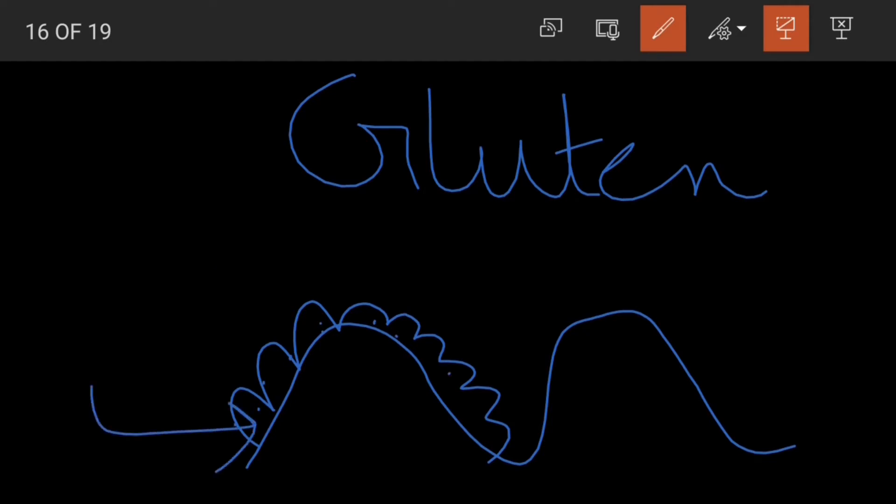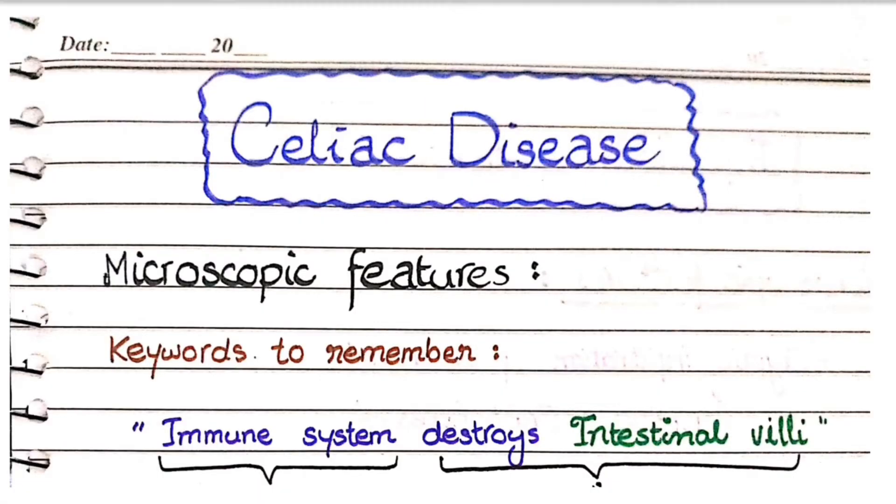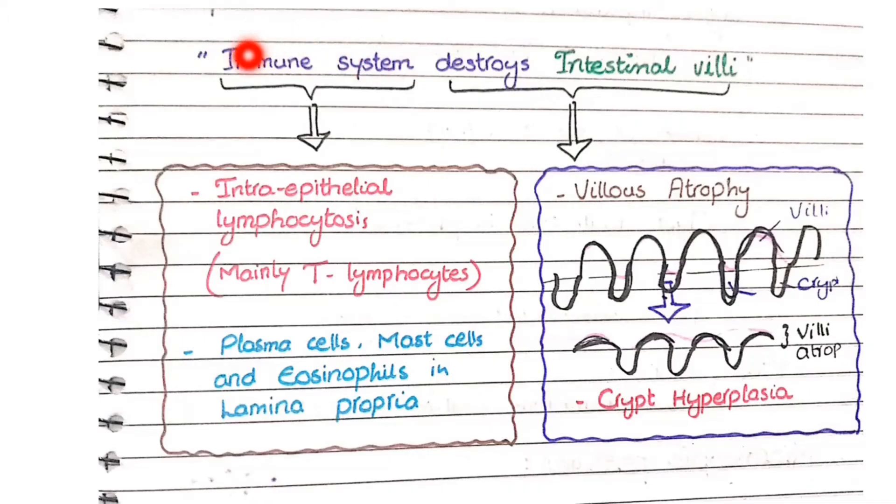So the keywords are immune system destroys the intestinal villi. The first keyword is immune system. This immune system will be visible as intraepithelial lymphocytosis, mainly comprising of T lymphocytes.